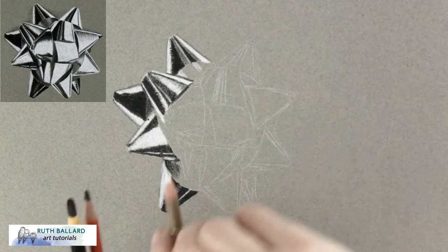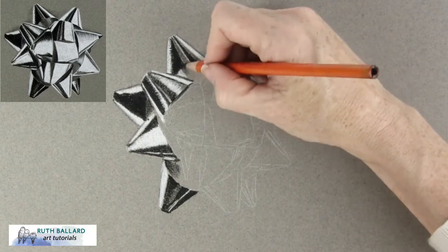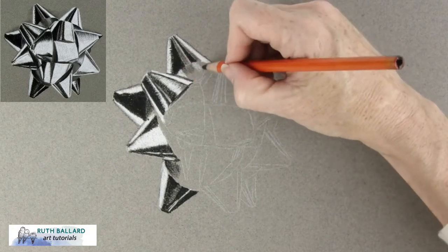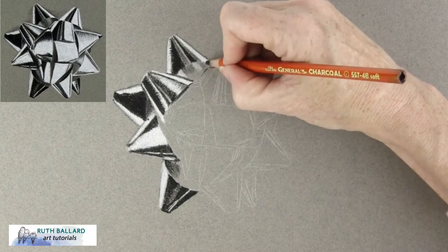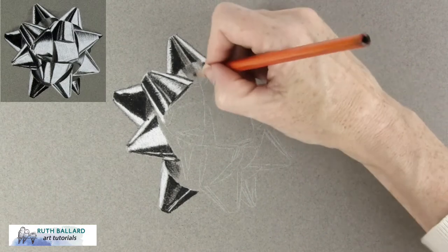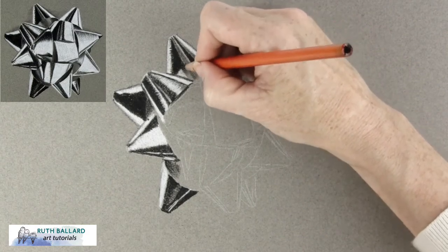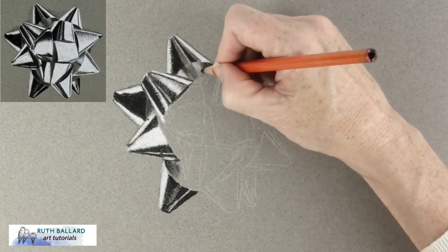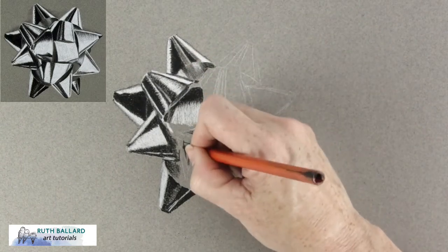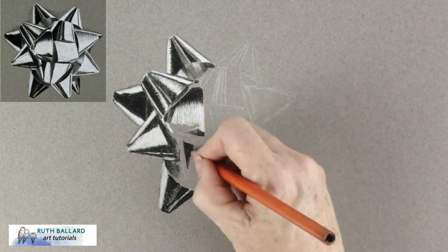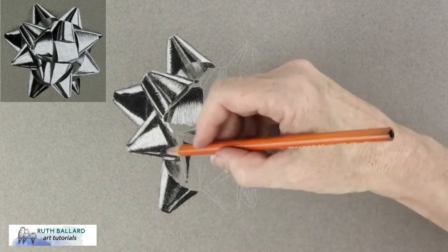Remember to keep those edges crisp and sharp around the curves. I haven't had to use a blender much as the surface I'm using is fairly smooth but it does help to make the objects appear shinier by smoothing the pigment out and pressing it into the tooth of the paper.